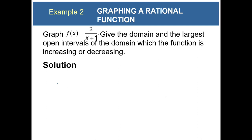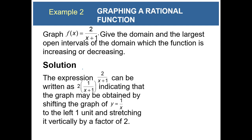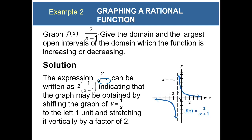Example two: graph f of x equals two over x plus one, give the domain and the largest open intervals for which the function is increasing or decreasing. The expression two over x plus one can be written as two times one over x plus one, indicating the graph may be obtained by shifting the graph of y equals one over x to the left one unit and stretching it vertically by a factor of two. Since the one is on the inside, it shifts the graph left one unit.